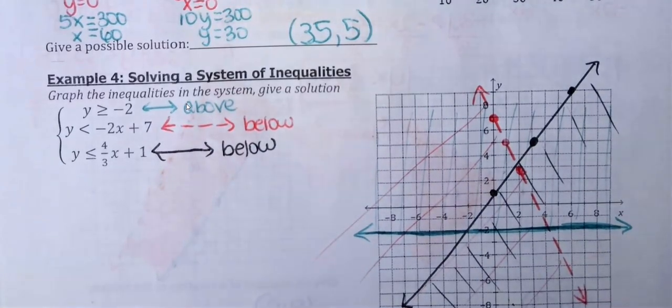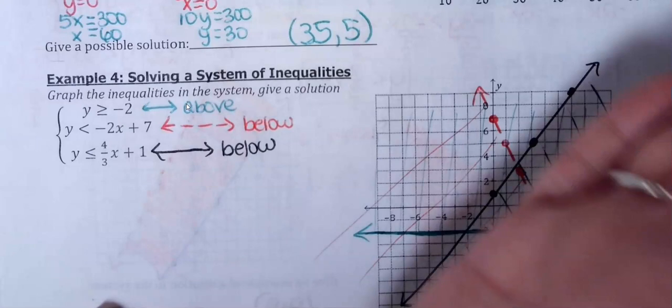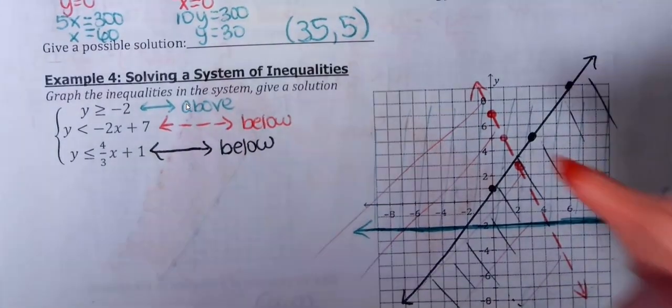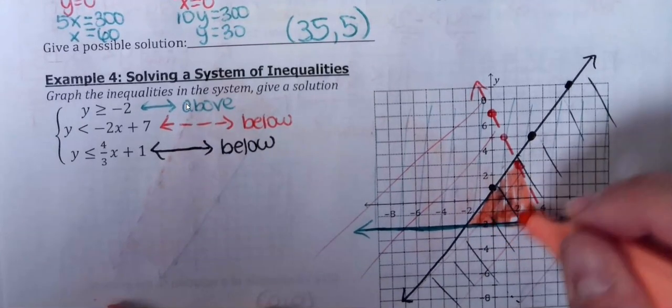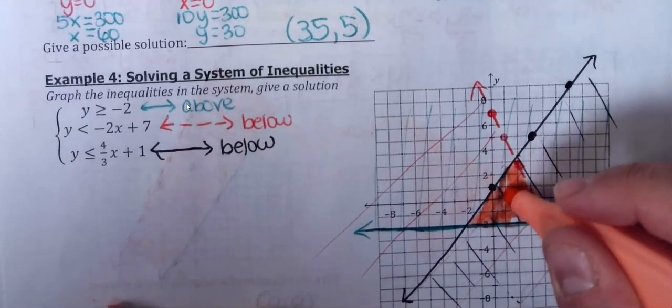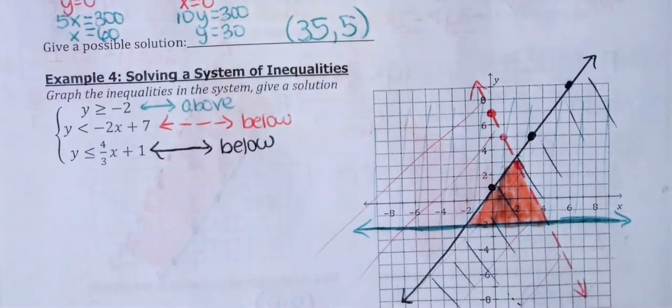Okay, so I've got to be above my green line, below my red line, below my black line. So the overlap is going to be this lovely little triangle right in here. And it's not a huge area, but all the points that fall in that region would work for all three.